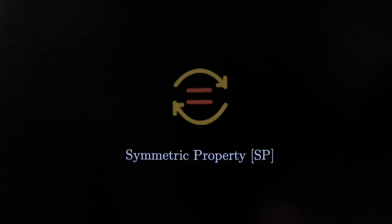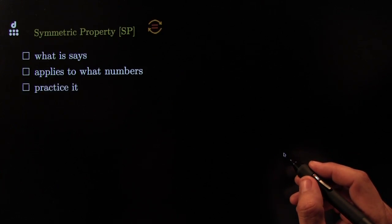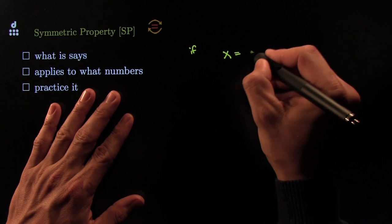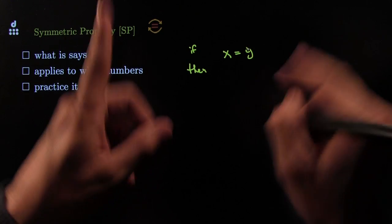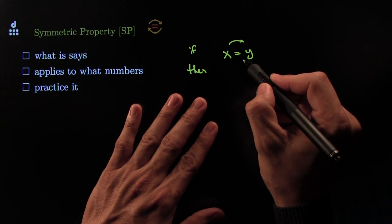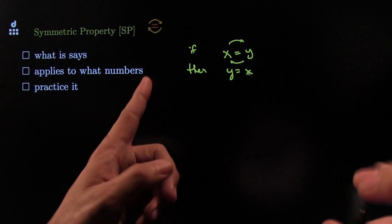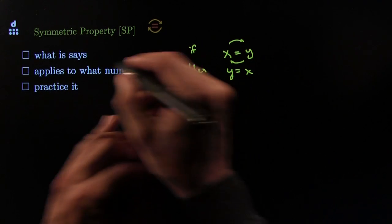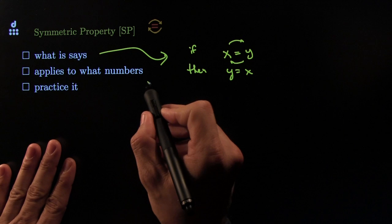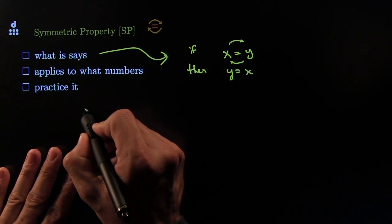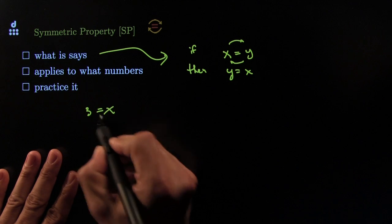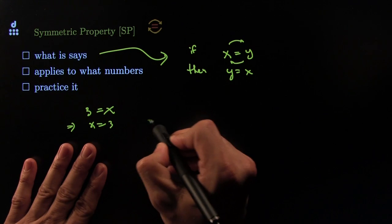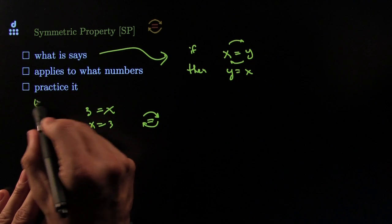Let's go on to a new screen: the Symmetric Property. I want to explain what it says, what it applies to, and practice it. What it says is this: if x is equal to y, then you can commute these — it's almost like the commutative law, but they're commuting across the equals sign. So y is equal to x. In other words, you can reverse the equation. For example, if 3 is equal to x and you don't like the x on the right side, that implies x is equal to 3. You can switch things from one side of the equals to the other.